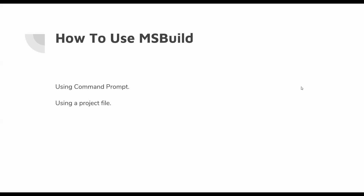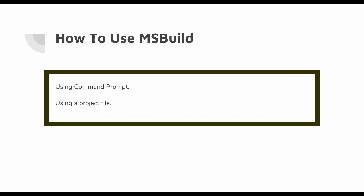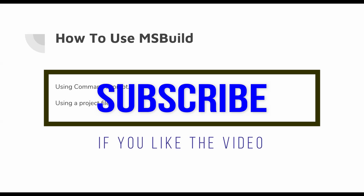So there are two basic ways to use MSBuild. The first one is to use the command prompt and the second one is to use a project file. The usage of the command prompt is very limited, whereas in a project file we can define the entire steps and tasks we want to execute while building the application. I will show you examples of both of these ways to build an application using MSBuild.